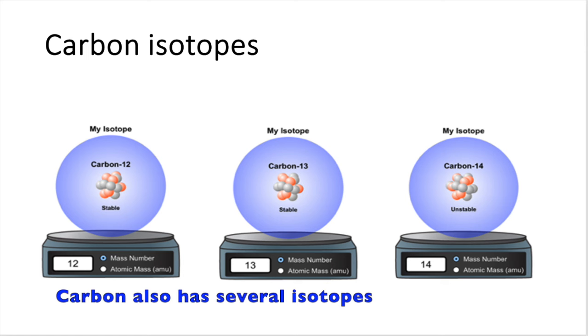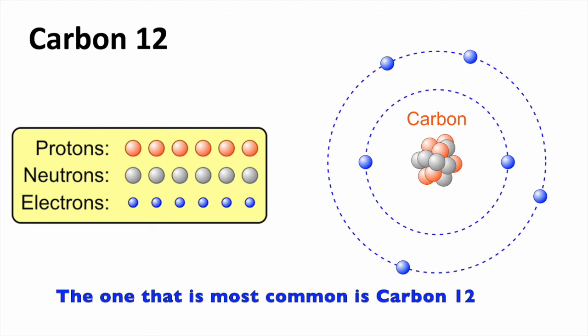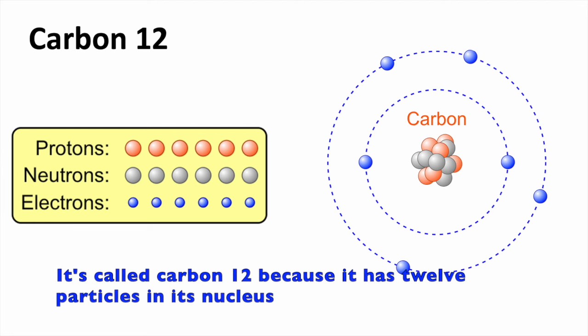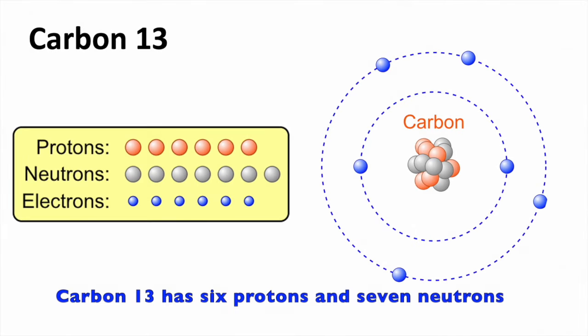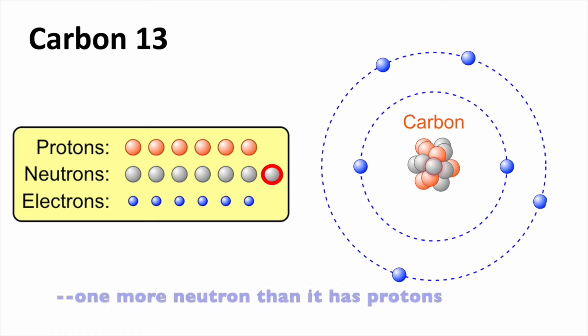Carbon also has several isotopes. The one that is most common is carbon-12, with six protons and six neutrons. It's called carbon-12 because it has 12 particles in its nucleus. Carbon-13 has six protons and seven neutrons—one more neutron than it has protons.